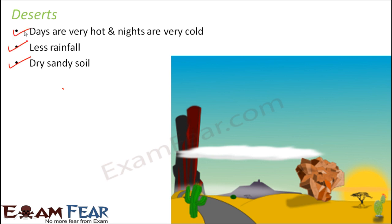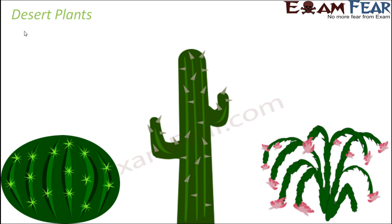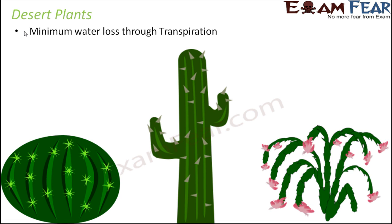Very limited plants are seen in desert. Now, it is difficult for many plants to adapt to these extreme conditions. However, deserts do have a limited number of plants. There are certain plants like cactus which are seen in deserts, and they are adjusted in certain special ways because of which they are able to survive in desert.